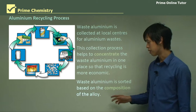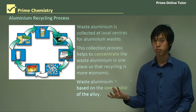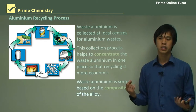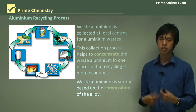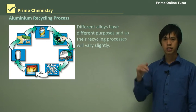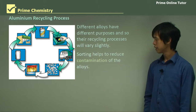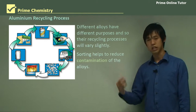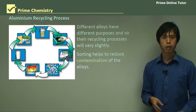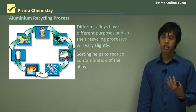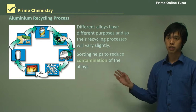Waste aluminium is sorted based on the composition of the alloy. If you've got a jet engine made of aluminium, you're not going to recycle it the same way as an aluminium can, because they're very different metals and need very different refining processes — otherwise it will contaminate the aluminium. Different alloys have different purposes and their recycling processes will vary slightly. Sorting also helps to reduce contamination of the alloys, because you don't want to cross-contaminate — some aircraft manufacturer putting together a jet engine contaminated with can aluminium could have a very bad outcome. You really don't want contamination, particularly in high-risk applications like jets.